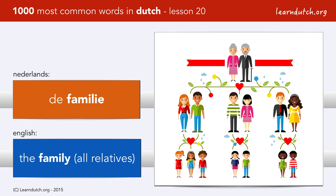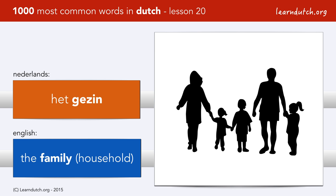De familie. Very important in the Dutch language. When we say the word familie, we mean all relatives, including uncles, aunts, cousins, grandparents, etc. This should not be confused with the word het gezin, which includes the parents and the children — one household.